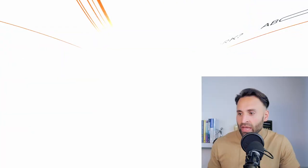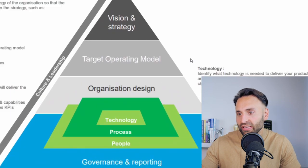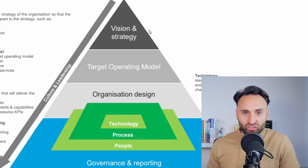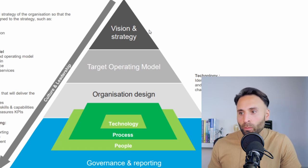To further see how a target operating model fits within the entire business ecosystem, here's a pyramid from Deloitte. At the top of the pyramid you have your vision and strategy, which is usually set by the CEO or the board of directors — they decide what is the overarching mission, vision, and goals they want to accomplish.